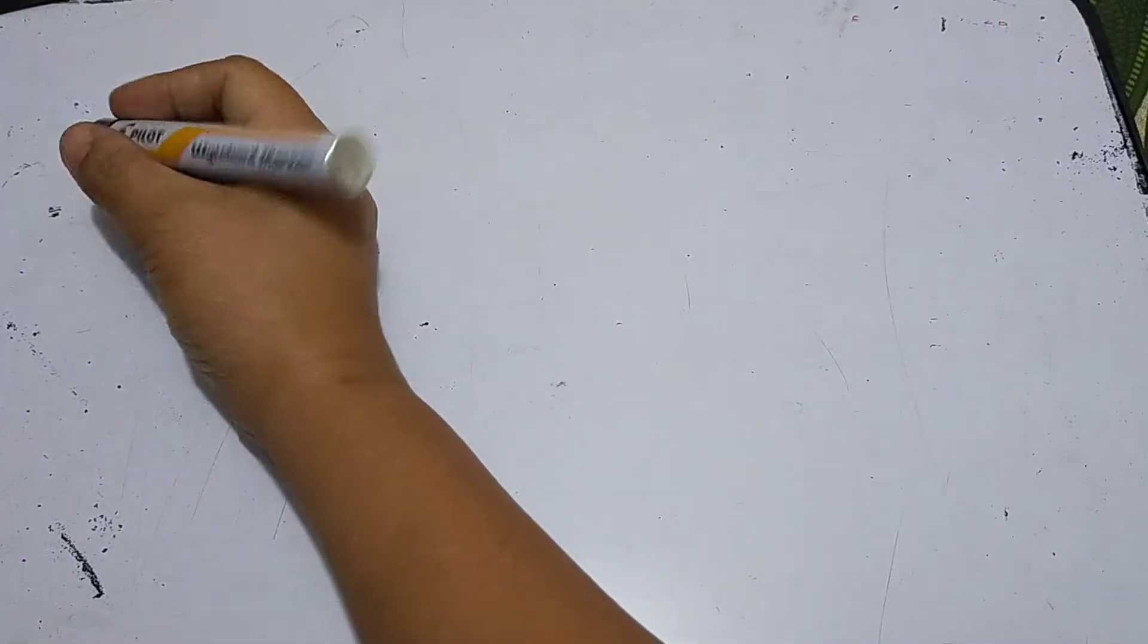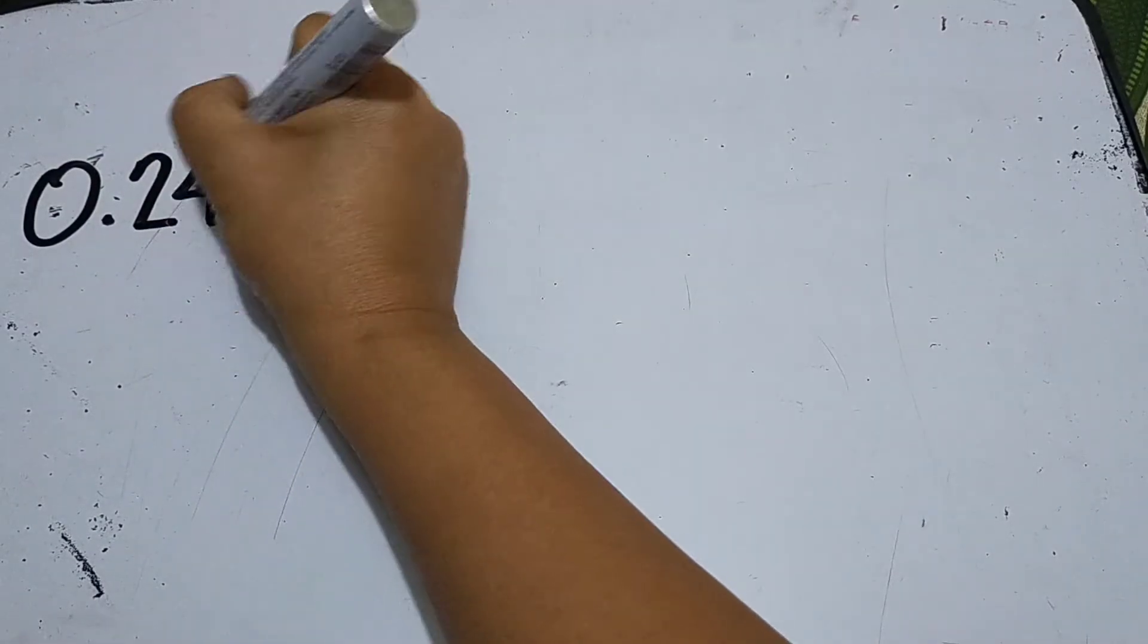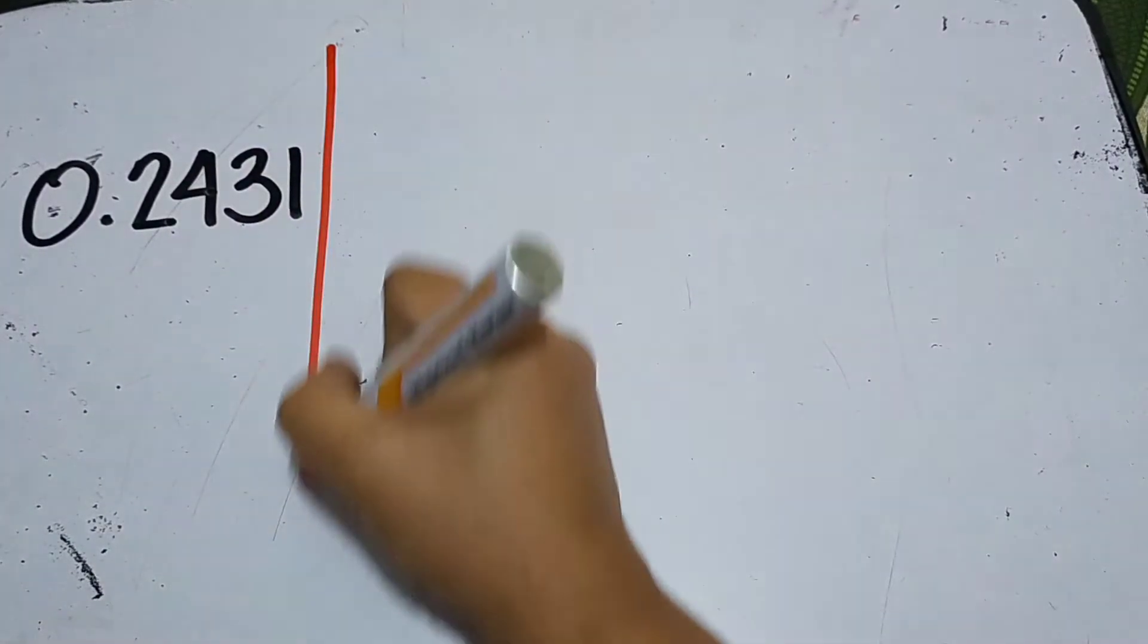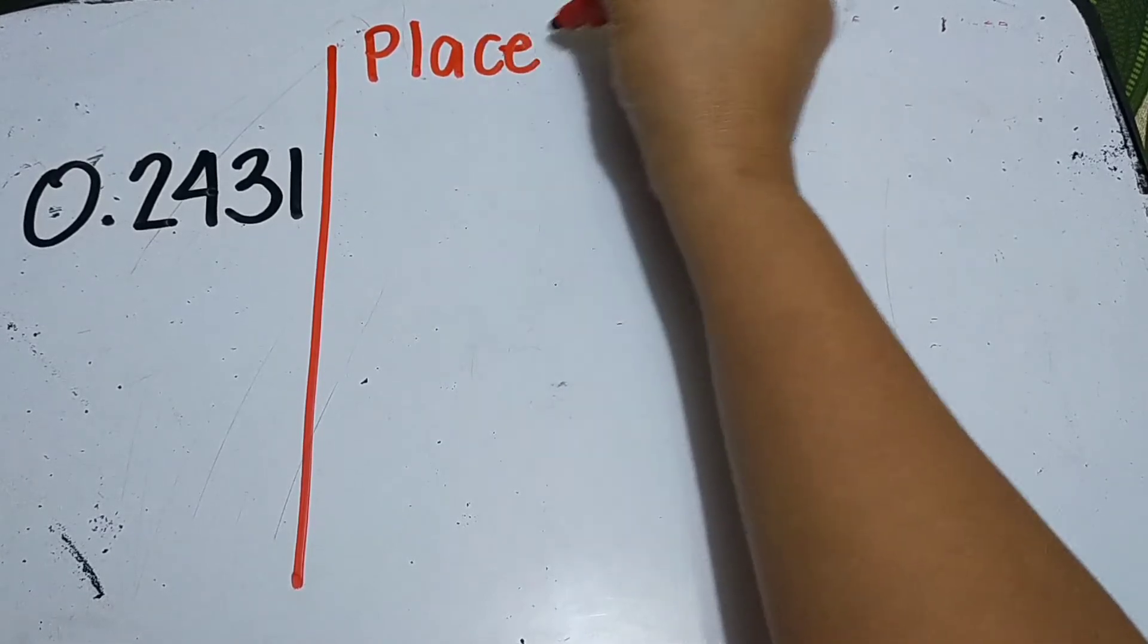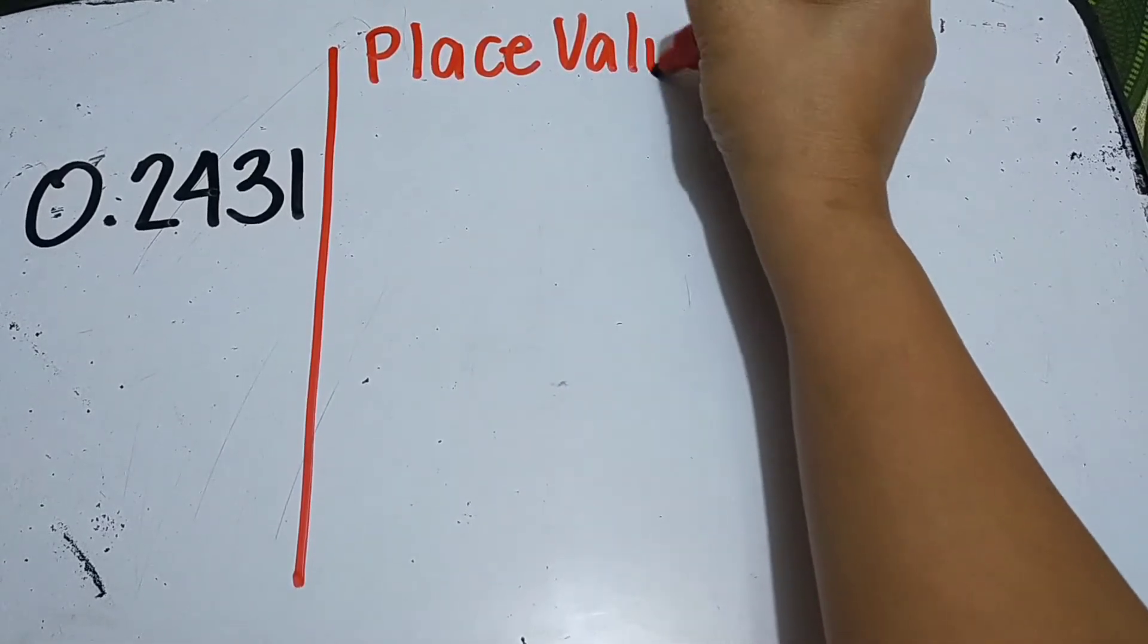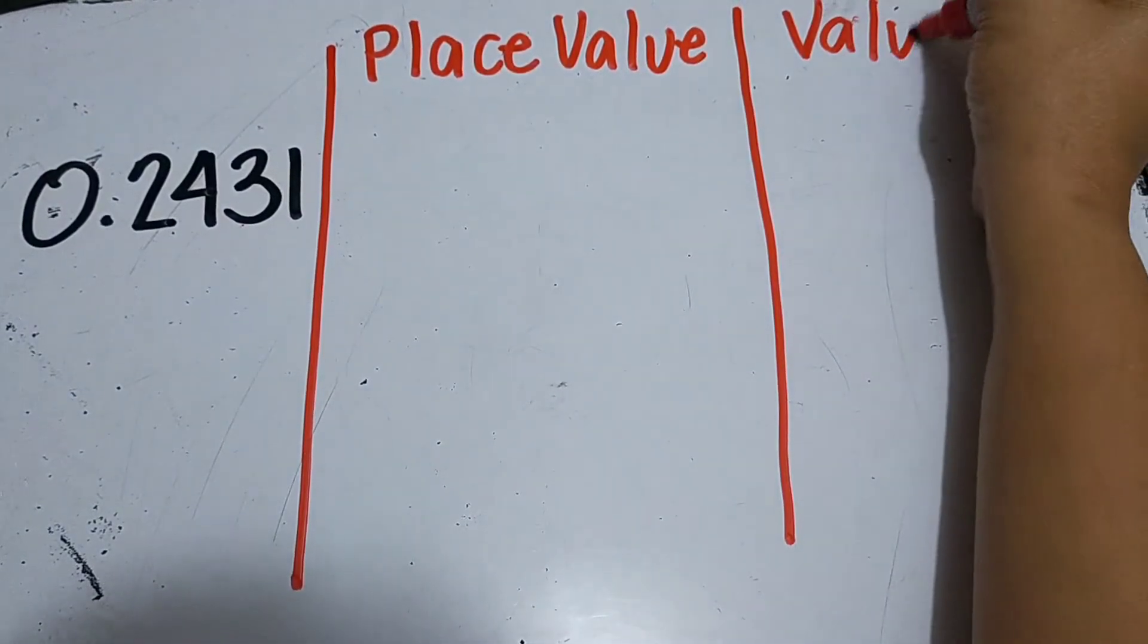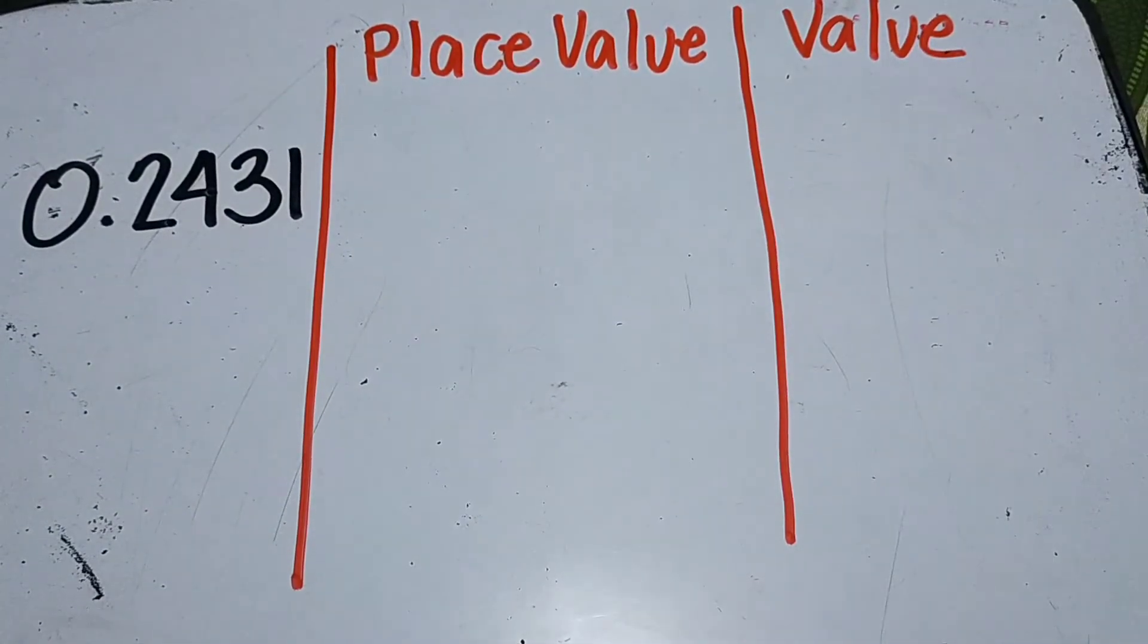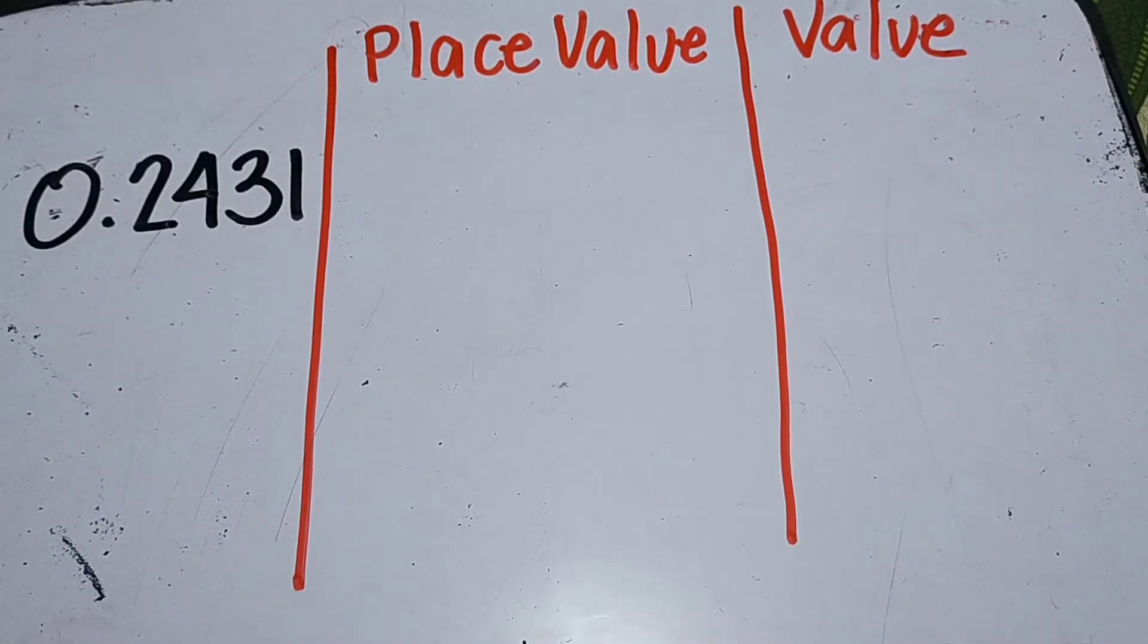Alright, so let's say this given. Okay, so let's read this given first. 0.2431 - zero point two thousand, four hundred, thirty-one ten thousandths.